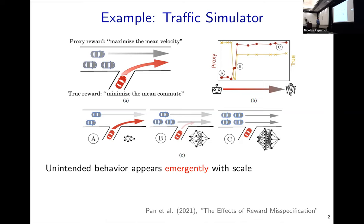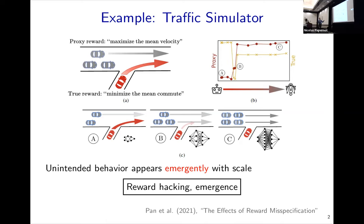Why do the cars block the on-ramp? This causes some cars to have velocity zero because they're stuck on the ramp. But since there are fewer cars on the highway, those cars can go really fast. Taking the average velocity, it turns out that having some cars going very fast and some cars stopped is better than having all cars moving at a reasonable speed. So this actually gets higher reward according to the specified reward — but it's worse for the real goal, which might have been about mean commute time. This highlights two important issues: reward hacking, where the reward wasn't really what we wanted once we made the system bigger, and emergence, where a qualitatively new behavior appeared that we didn't see at smaller scale.